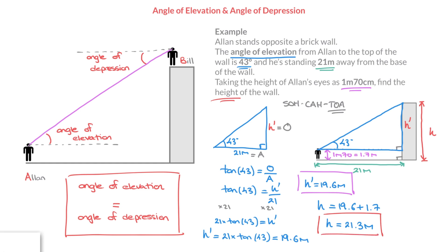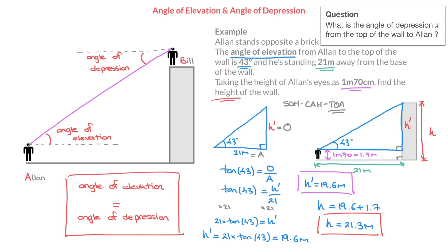Although this wasn't initially asked, what if we add the question: what is the angle of depression X from the top of the wall to Alan? To answer that, we can use the result I boxed earlier. I'll draw a horizontal line from the top of the wall — the angle we're trying to find is angle X. Using the result that the angle of depression equals the angle of elevation, we can state that this angle of depression X must be equal to the angle of elevation, which is 43 degrees. So X = 43 degrees.